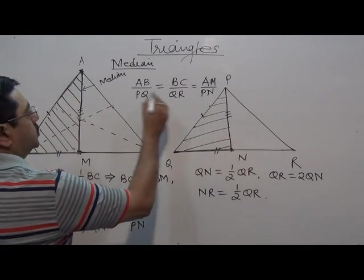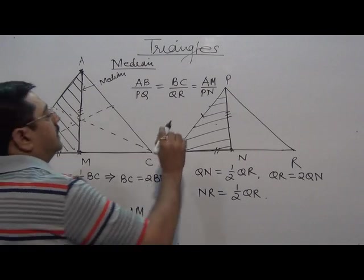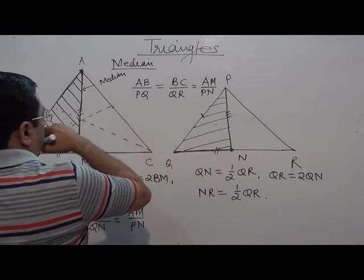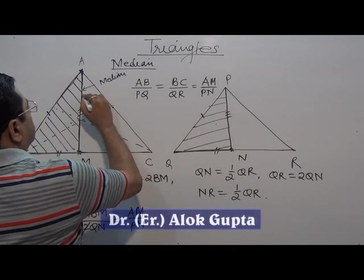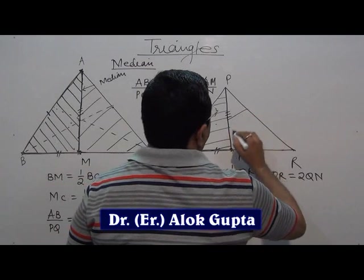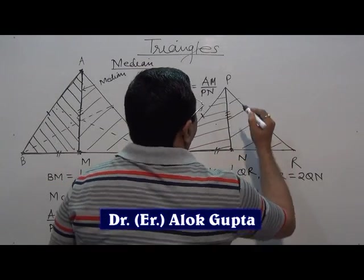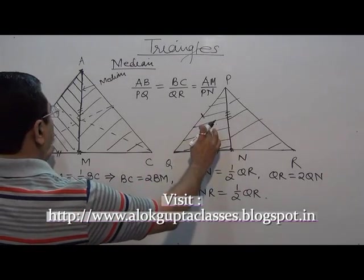So these two triangles are similar. Exactly in the same way, I can prove that these two triangles - this triangle that is forming - this triangle is also similar to this triangle. Now both triangles, these portions are similar to each other.